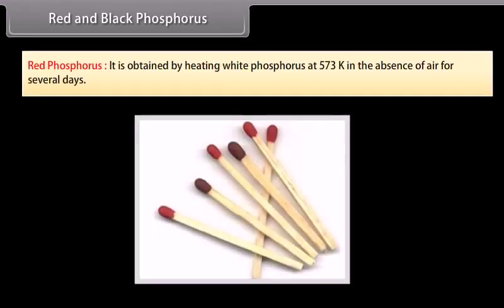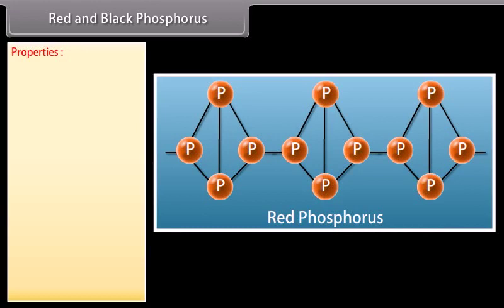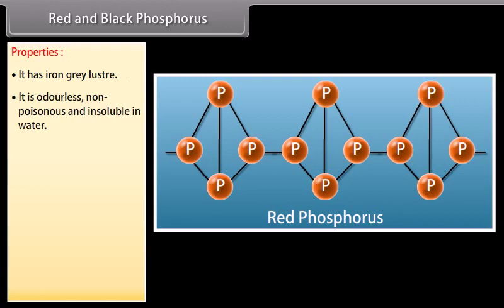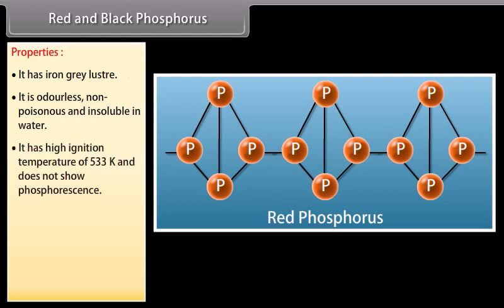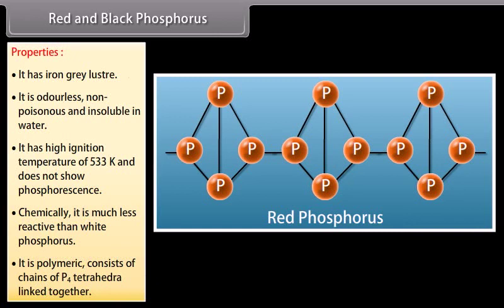Red phosphorus is obtained by heating white phosphorus at 573 K in the absence of air for several days. Properties: It has an iron-grey lustre. It is odourless, non-poisonous and insoluble in water. It has a high ignition temperature of 533 K and does not show phosphorescence. Chemically, it is much less reactive than white phosphorus. It is polymeric, consisting of chains of P4 tetrahedra linked together.